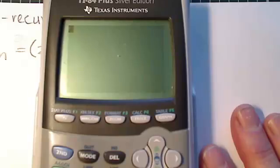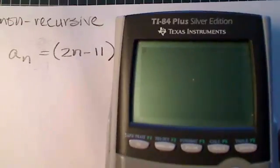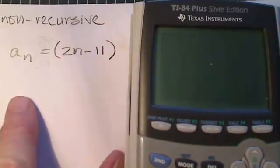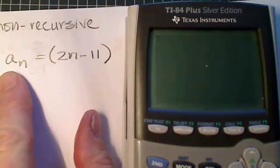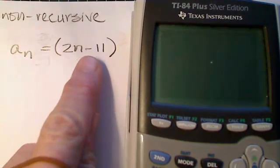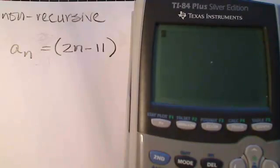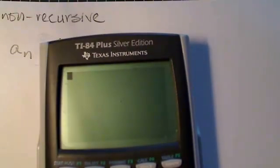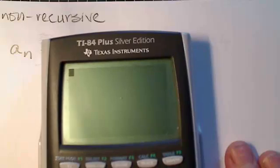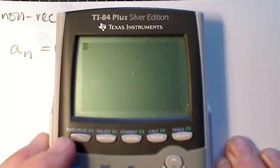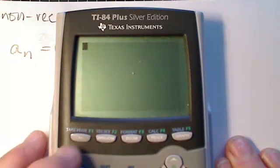Now let's look at our sequence that we're going to enter. Here is the form for my a sub n term. It's going to be 2n minus 11. So to enter that value, I'm going to go to y equals. I push the y equals button right there.